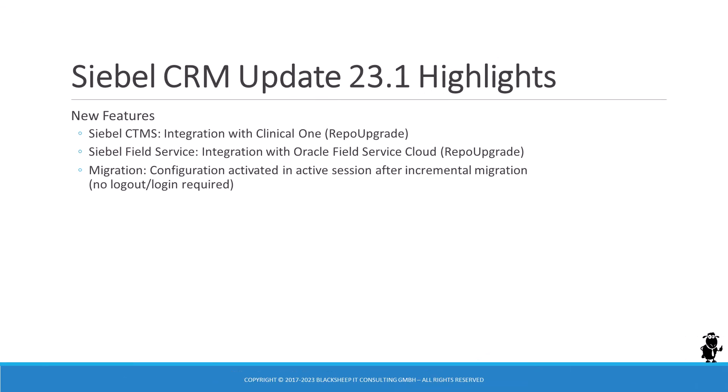On the 20th of January, Oracle made the latest update for Siebel CRM generally available. Siebel CRM Update 23.1 marks the arrival of Siebel CRM Industry Applications 23.0. Despite being simply the successor to 22.12, Oracle packed quite a few interesting features and enhancements, along with several bug fixes, into the January 23 installer.